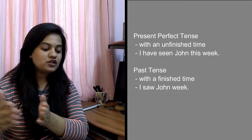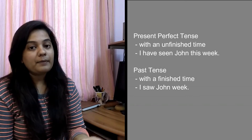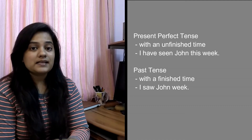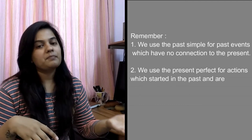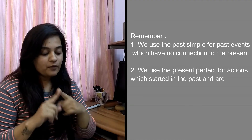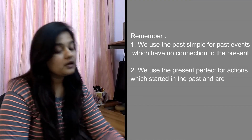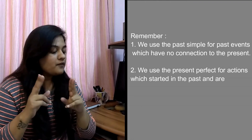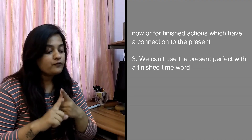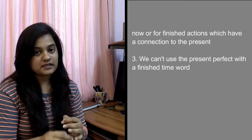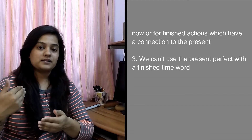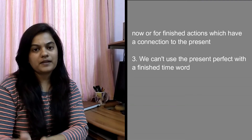These were the differences between simple past and present perfect tense. Remember: we use past simple for past events which have no connection to the present. Second, we use the present perfect for actions which started in the past and are still happening now, or for finished actions which have a connection to the present — any sentence still connected to the present and past. We cannot use the present perfect tense with finished time.